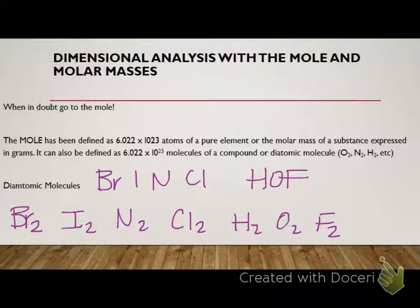So when they're by themselves, they have to be two of them. When they're in a compound, they can be anything. For instance, in glucose, you have six oxygen, C6, H12, O6, does not mean they have to be two. It's only when they are by themselves.